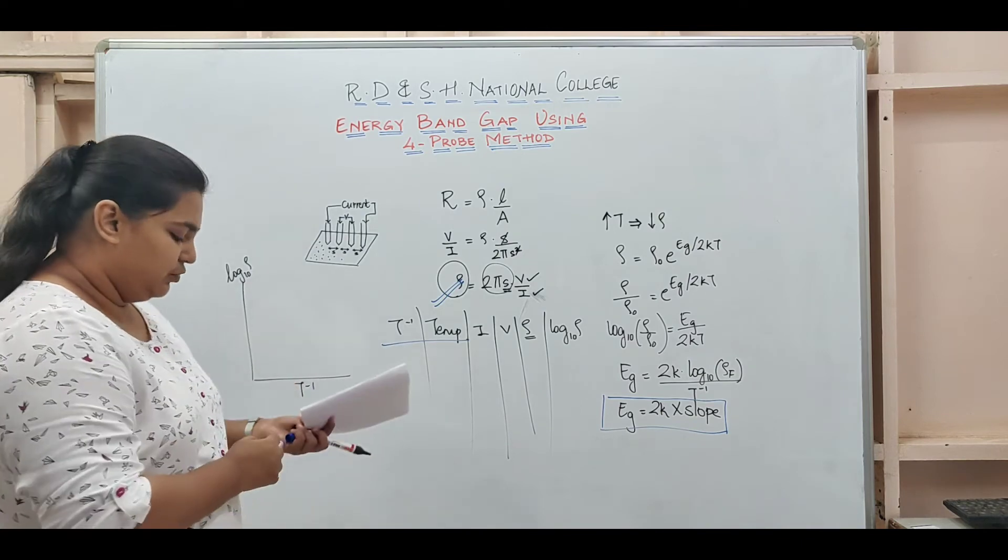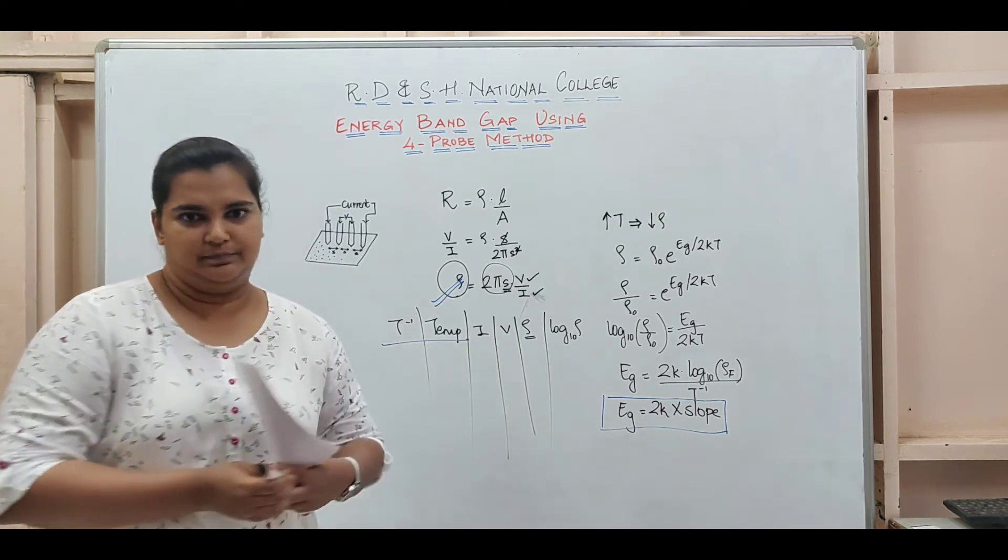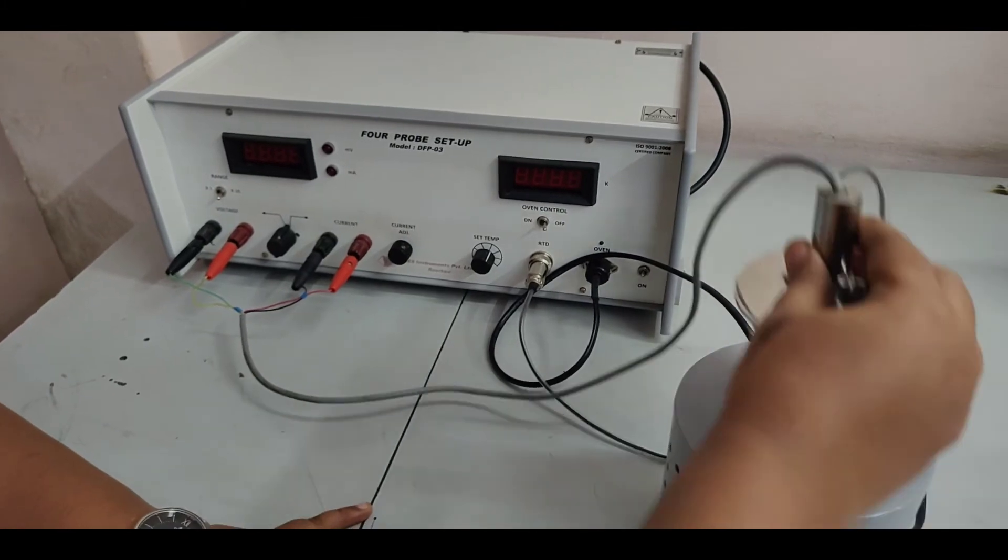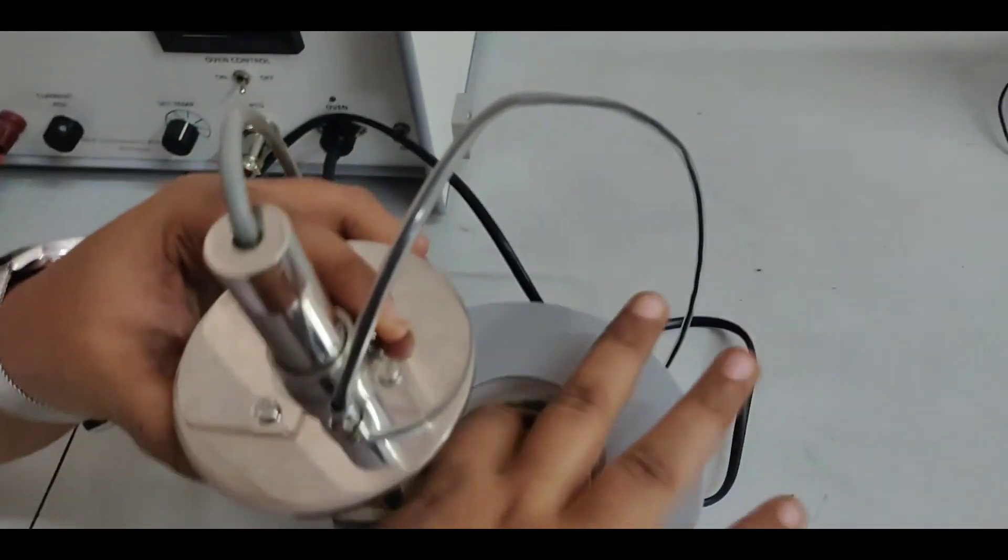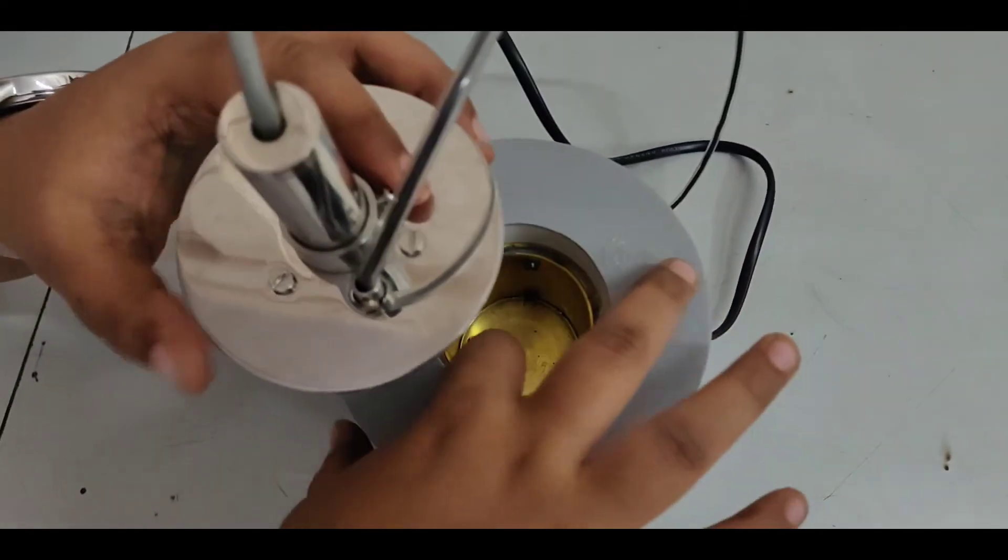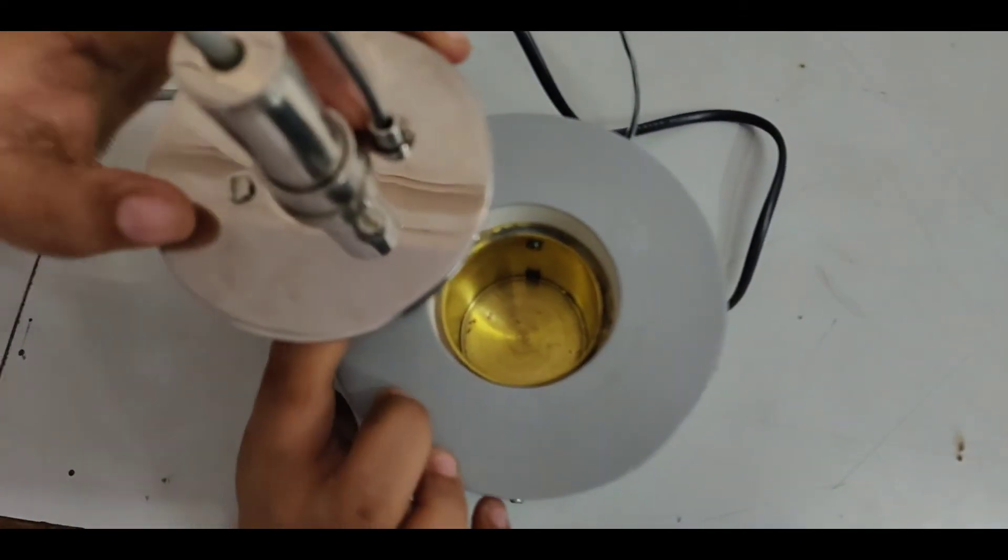So now let's move to the experimental setup. This is the experimental setup. This is the oven. As you can see inside, this is a metallic plate inside, so we will be heating that.